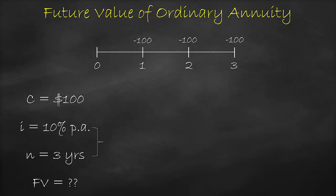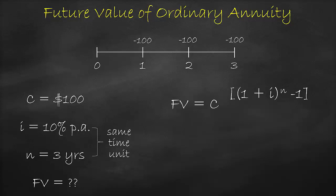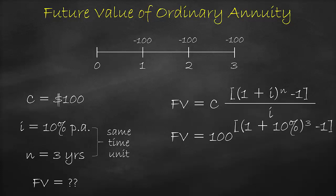In all time value of money questions, the interest rate and the number of periods must have the same time unit — if the interest rate is annual, express the number of periods in years. The future value formula is: cash flow multiplied by [(1 plus the interest rate) to the power of the number of periods, minus 1], all divided by the interest rate, which equals $331.